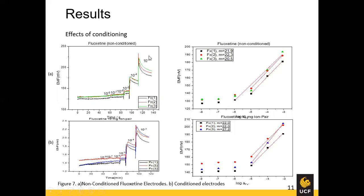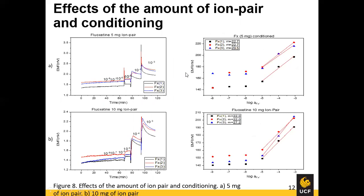First, we examined the effects of conditioning. We ran a set of unconditioned electrodes and a set of conditioned electrodes, and found there is not a lot of difference — only a small effect from conditioning, though we did observe some leaching. We also tested the effect of the amount of ion pair: 5 milligrams versus 10 milligrams. The 10 milligrams showed slightly higher, though not significantly different, results. From this point forward, we stuck with 10 milligrams of ion pair.